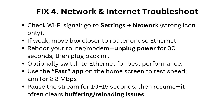Fix 4: Network and internet troubleshoot. Check Wi-Fi signal — go to Settings, Network, and look for a strong signal icon only. If weak, move the box closer to the router or use Ethernet. Reboot your router or modem by unplugging power for 30 seconds, then plug back in. Optionally switch to Ethernet for best performance. Use the Fast app on the home screen to test speed — aim for greater than or equal to 8 Mbps. Pause the stream for 10 to 15 seconds, then resume, as it often clears buffering or reloading issues.